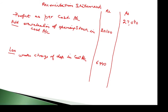Next entry is closing stock. Closing stock is on the credit side. In financial accounts, the closing stock on the credit side is more than in cost accounts, meaning profit in financial accounts is higher. So we write 'under valuation of closing stock in cost accounts' and add this amount.